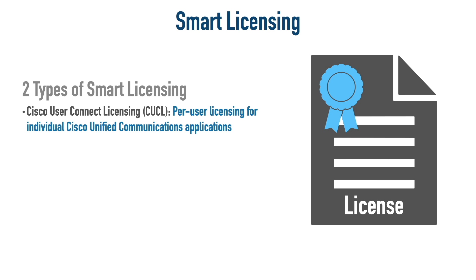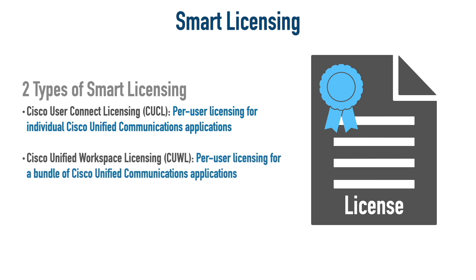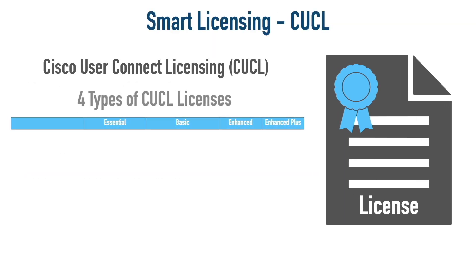The other type of smart licensing is also per-user licensing, but this is for a bundle of Cisco Unified Communications applications. Under CUCL — Cisco User Connect Licensing — there are four different types: Essential, Basic, Enhanced, and Enhanced Plus. There are lots of subtle differences, so let me give you the high points.